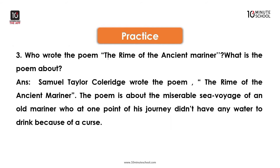Who wrote the poem 'The Rime of the Ancient Mariner'? What is the poem about? Samuel Taylor Coleridge wrote 'The Rime of the Ancient Mariner.' The poem is about the miserable sea voyage of an old mariner who, at one point of his journey, did not have any water to drink because of a curse.